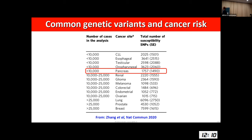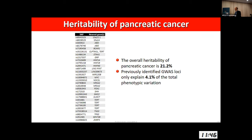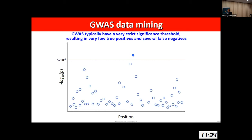Daniele mentioned this: the overall heritability of pancreatic cancer due to common variants in the genome is estimated to be around 20–25 percent, and the estimation of what we can explain from the known loci from GWAS is just a fraction of that. So this is very clear evidence that there is a lot more to be discovered.